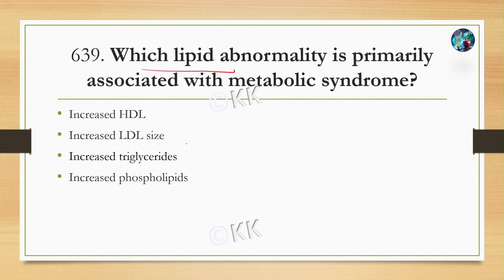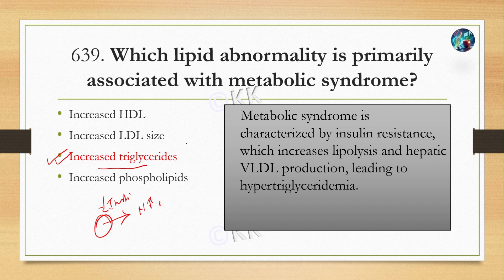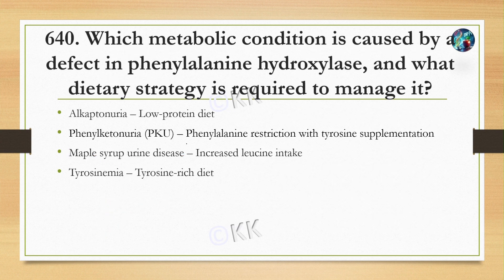Which lipid abnormality is primarily associated with metabolic syndrome? Option A: increased HDL. Option B: increased LDL size. Option C: increased triglycerides. Option D: increased phospholipids. The correct answer is option C: increased triglycerides. Metabolic syndrome is characterized by insulin resistance, which increases lipolysis and hepatic VLDL production, leading to hypertriglyceridemia.